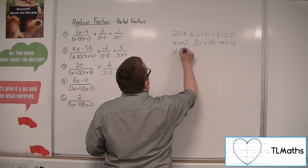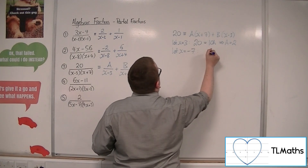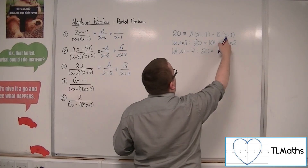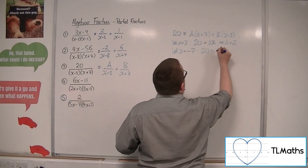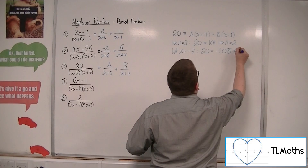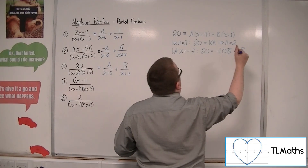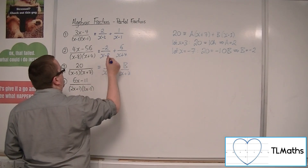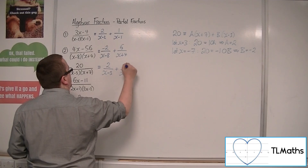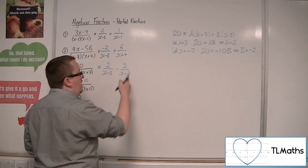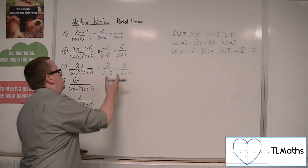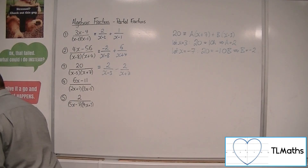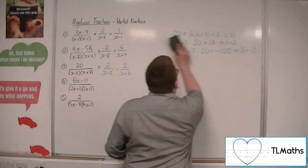If we let x be minus 7, that knocks out the A bracket. Minus 7 take away 3 is minus 10, so minus 10B. Therefore B must be minus 2. So A is 2, B is minus 2, and we write the answer as 2/(x - 3) minus 2/(x + 7).